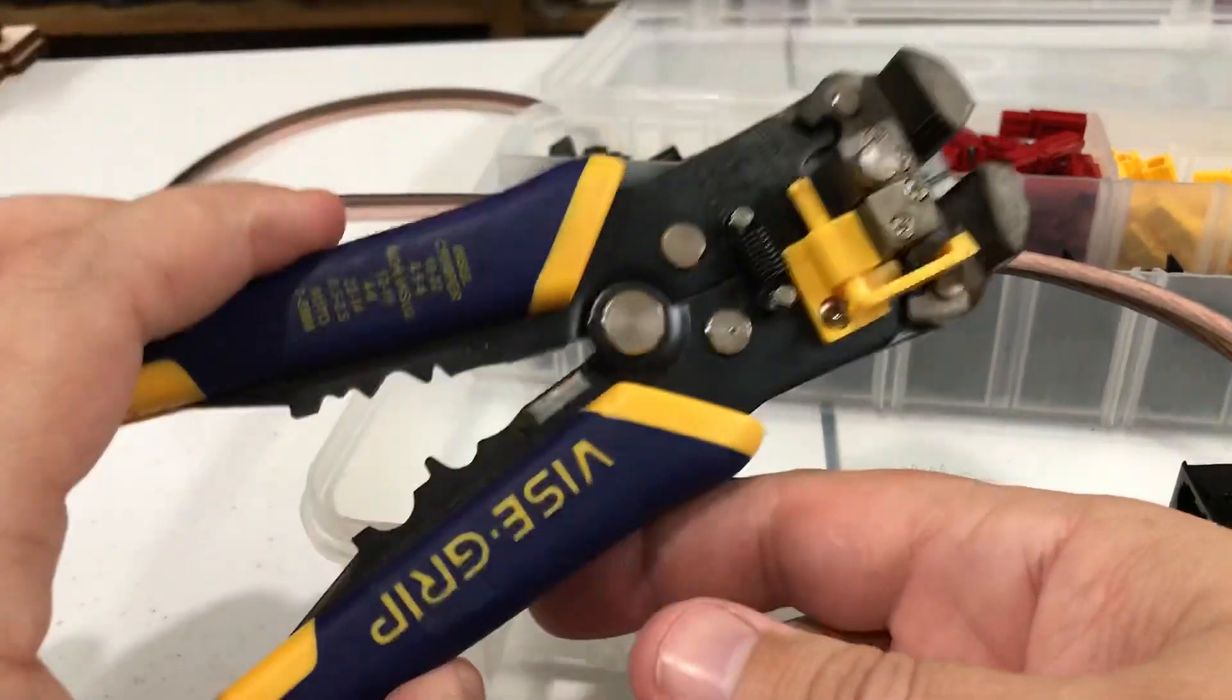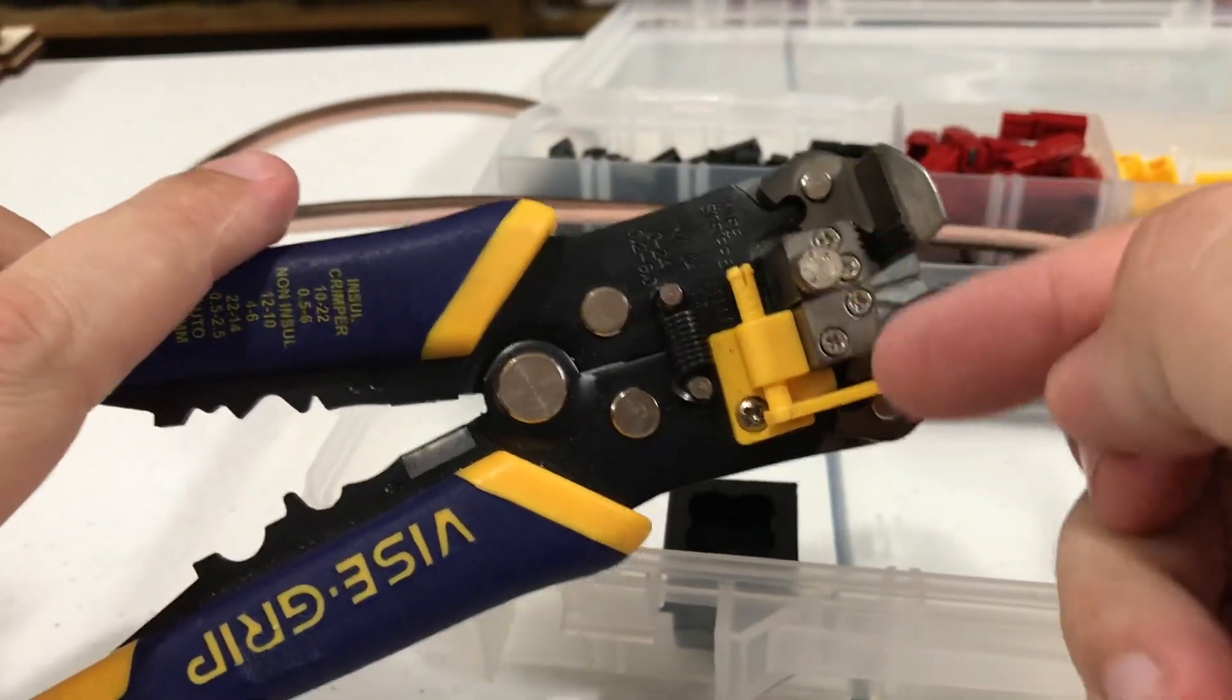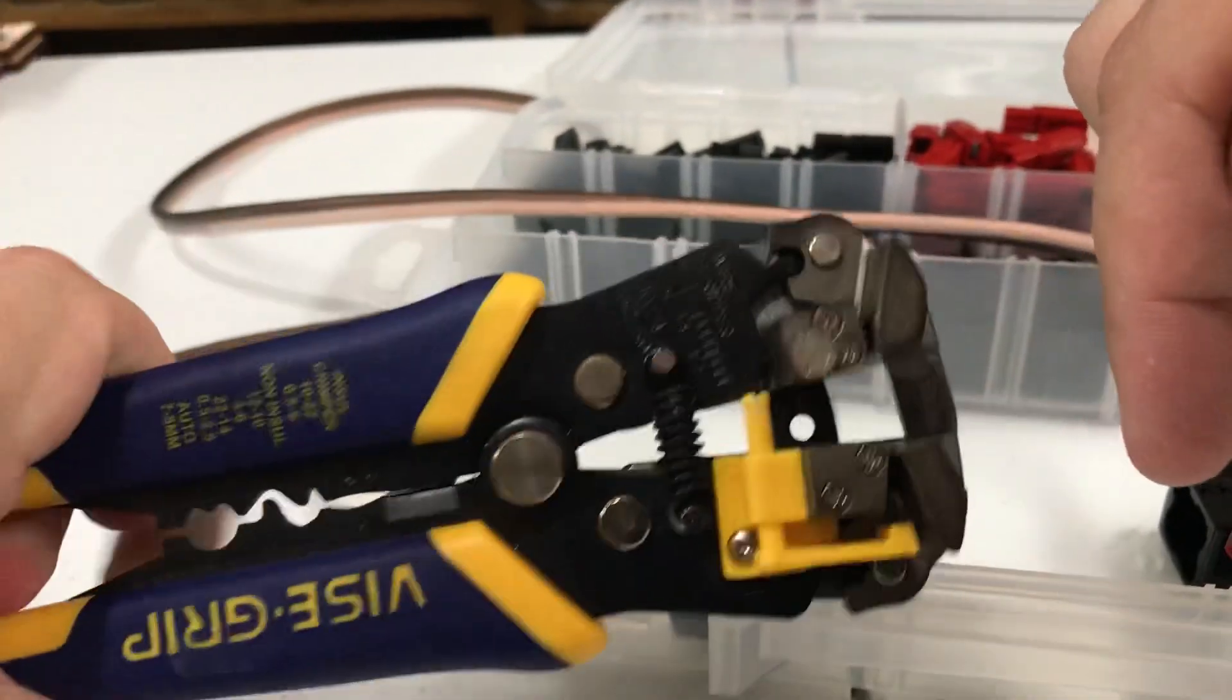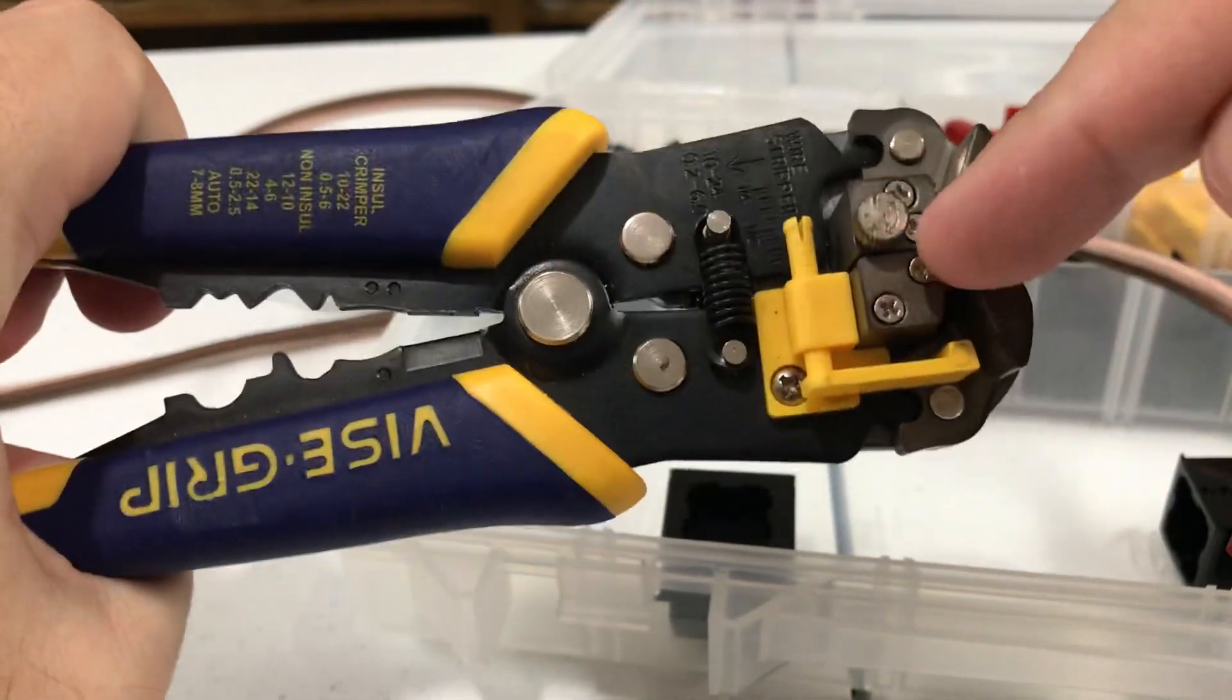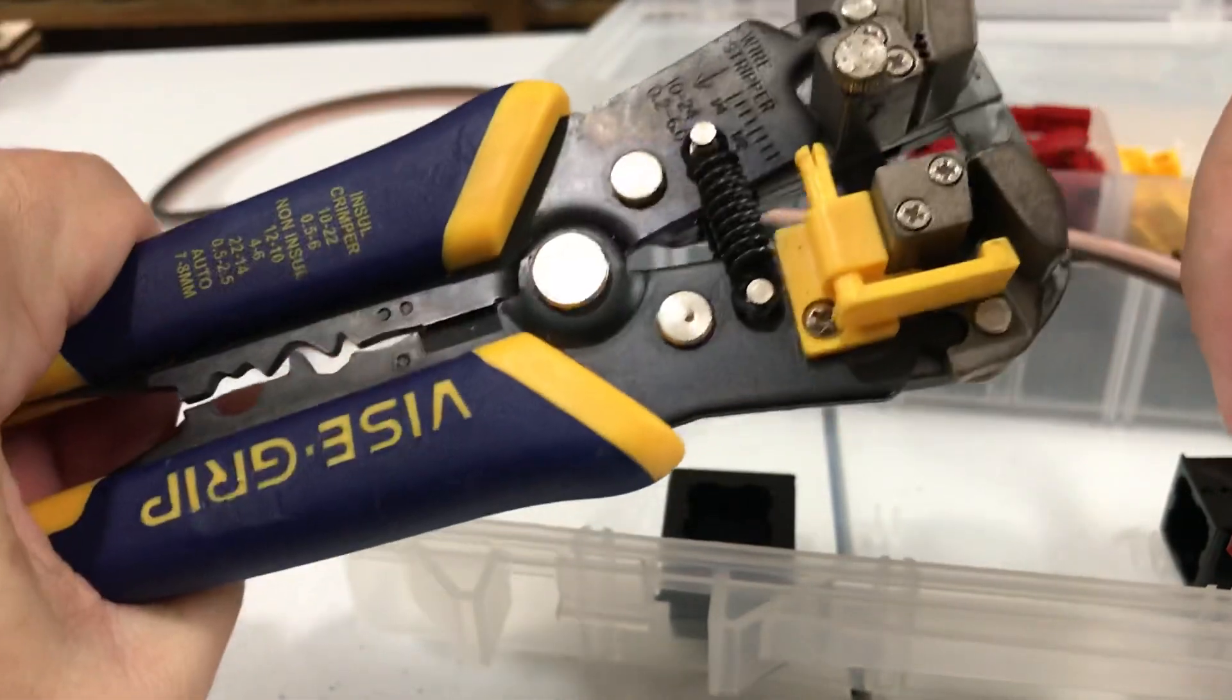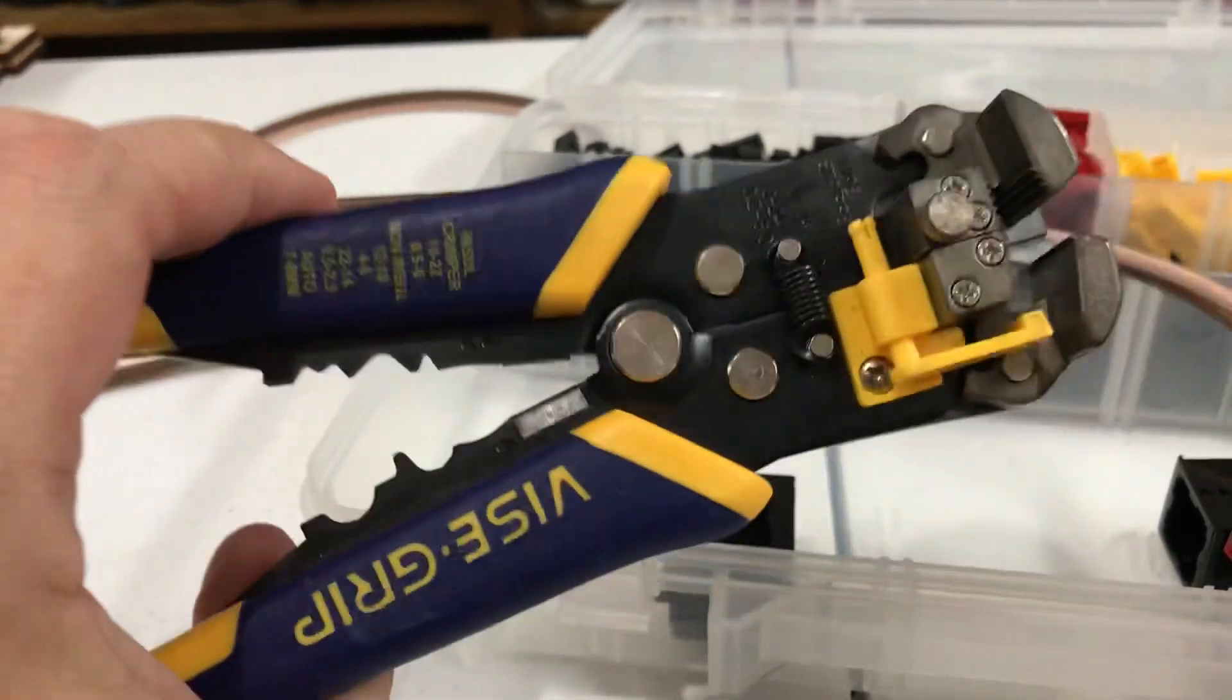You need an automatic wire stripper. I like this kind, this is my favorite kind. You put the wire in here, you have a few adjustments, but after you get it set up, you just lay the wire in here up to this edge. The wire goes in like this and then it grabs and makes a cut, a tear and rips the sheath off all in one motion. Very handy. You need that.